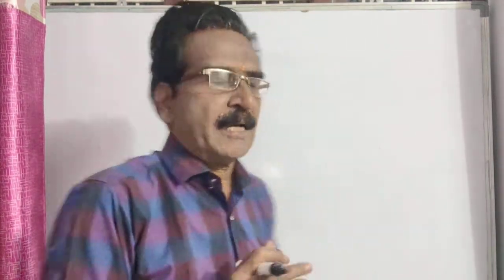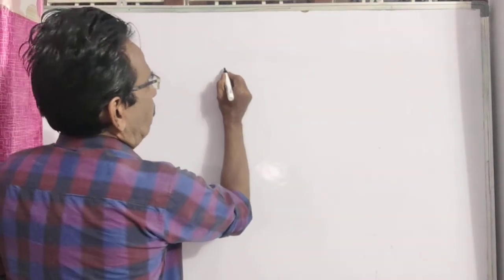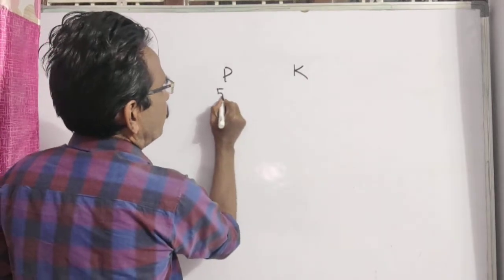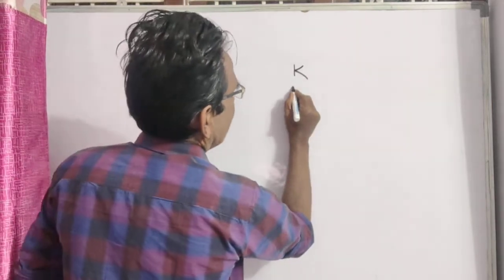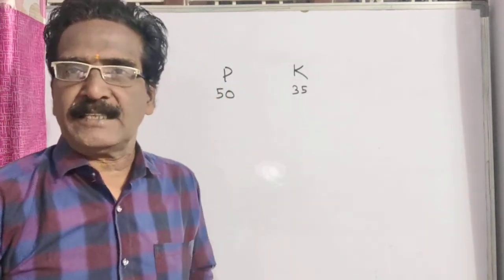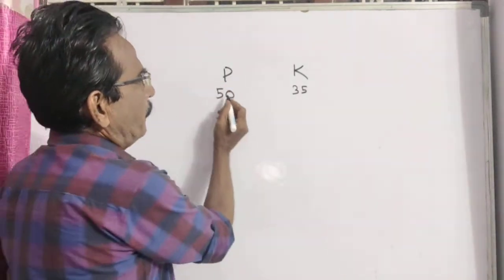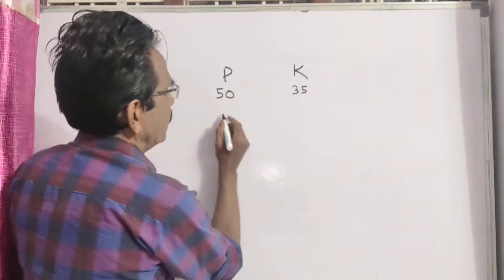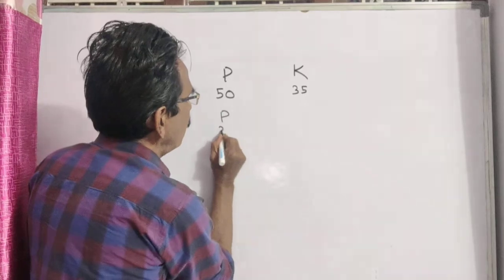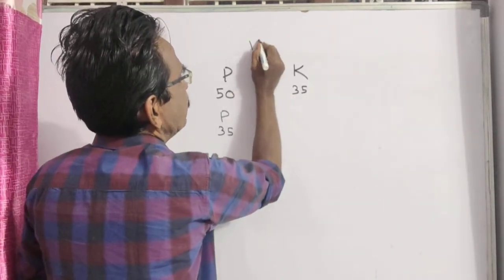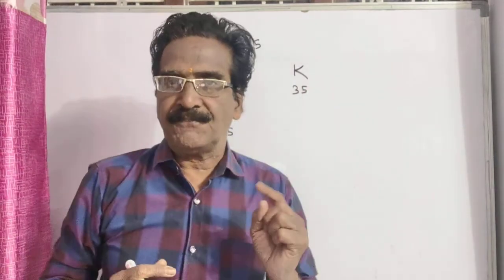Friends, before I tell you this problem, I have to tell you a small example. Say Parag is 50 years and Kalyan is 35 years — these are their present ages. If Parag was at the age of Kalyan, that is, if Parag was at the age of 35, then the difference between their ages is 15 years.